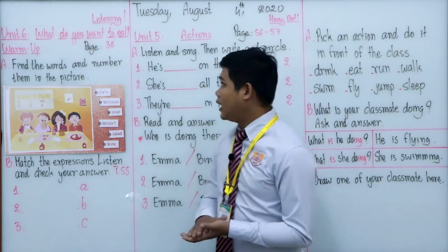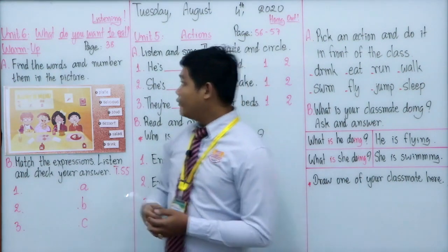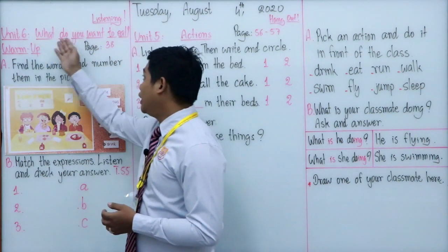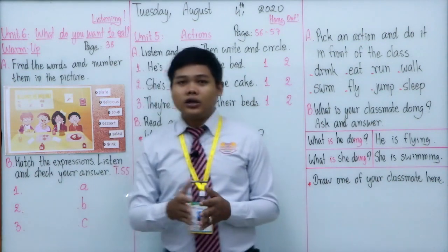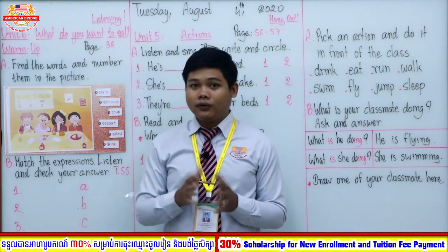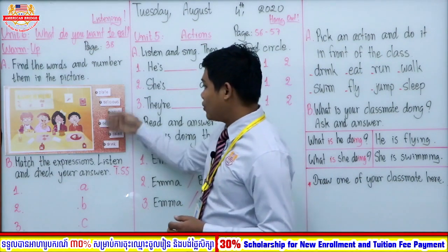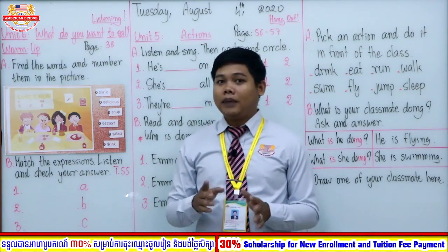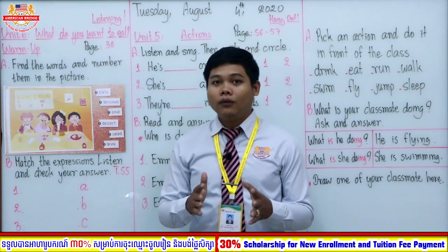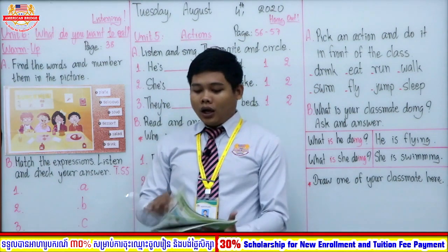Without further delay, here is the first block for Listening Starter One. We will start our new unit — Unit 6: What do you want to eat? Before we start our new unit, we have to learn six new vocabulary words. But first, can I test you on the vocabulary from Unit 5? Do you still remember those words?